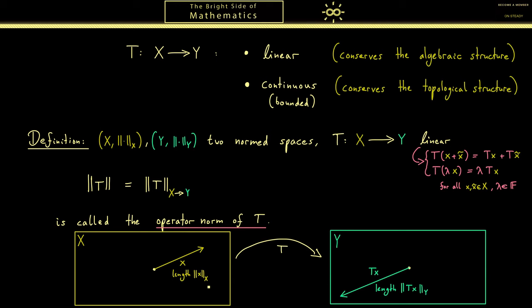What we now can put in relation is how much did the length change from left to right. In other words, what is the quotient of the length of Tx divided by the length of x. Of course this is now a number we could use as a definition for the norm of T. However of course this can only be meaningful if we look at all possible inputs on the left hand side. So we are looking at all possible ratios that can come out by going through all the x. Obviously the only exception should be the zero vector because this one is the only one with length of zero.